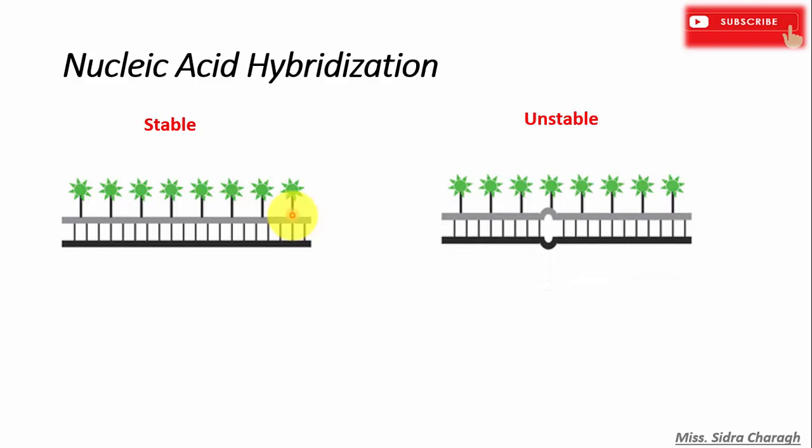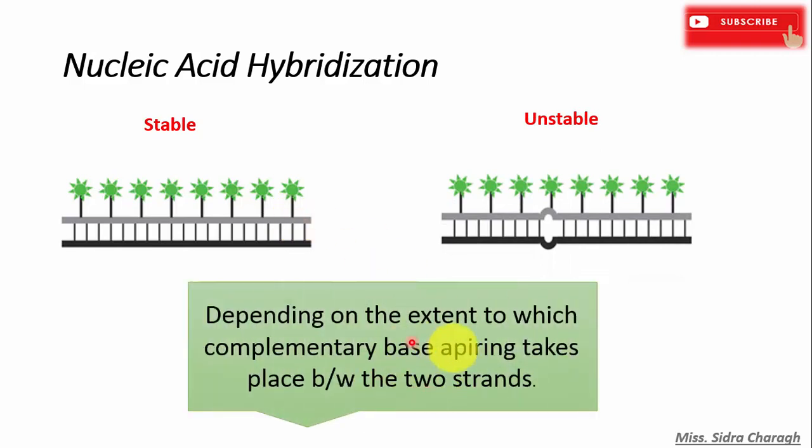The hybrid formed as a result of nucleic acid hybridization can be stable or unstable depending on the extent to which complementary base pairing takes place between the two strands. So if there is a high degree of complementary base pairing between the two strands, the hybrid formed is stable.